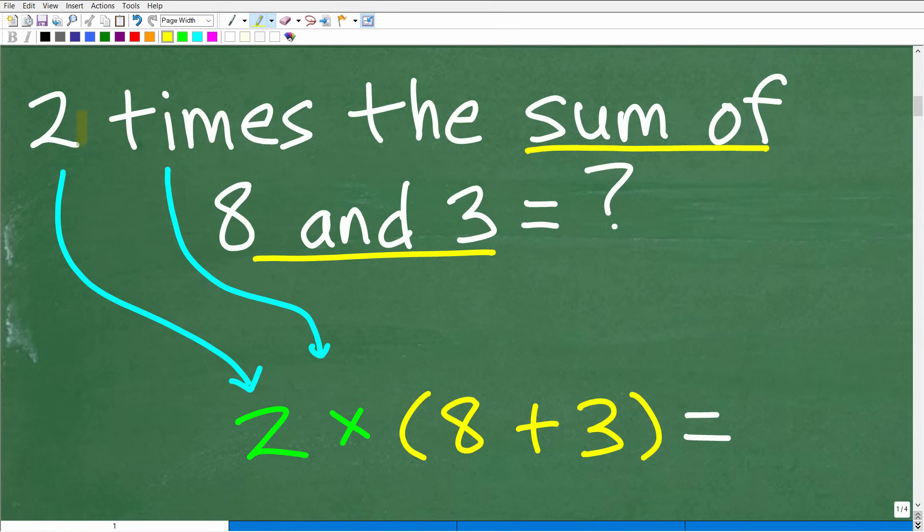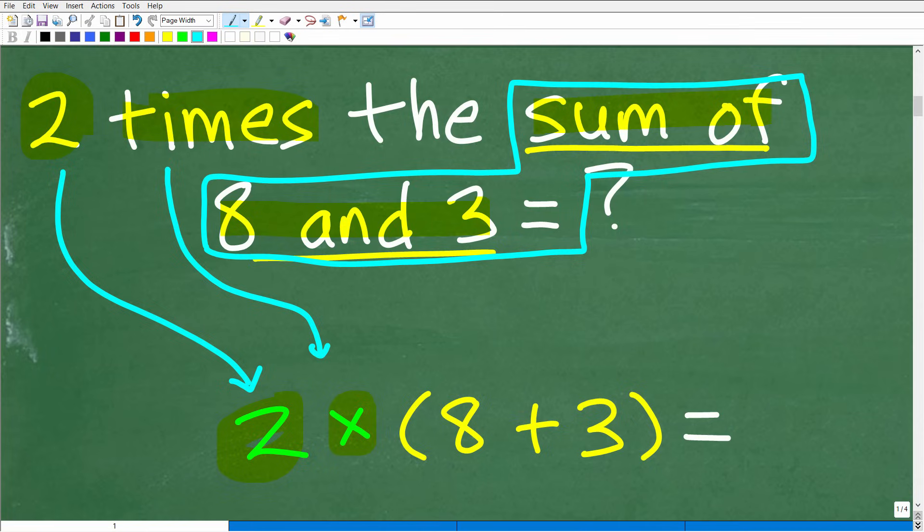Let's go ahead and translate this verbal phrase into a mathematical sentence. We'll just take it one word at a time. So here we have two. Two is two. Two times means multiplication. Two times what? Two times the sum of eight and three. And this part of the problem is where a lot of people don't understand strongly enough. Everyone probably will say the sum just means add things up. And you would be correct.